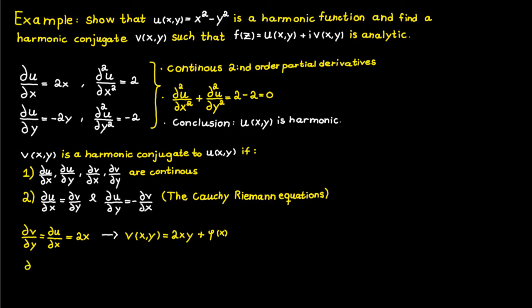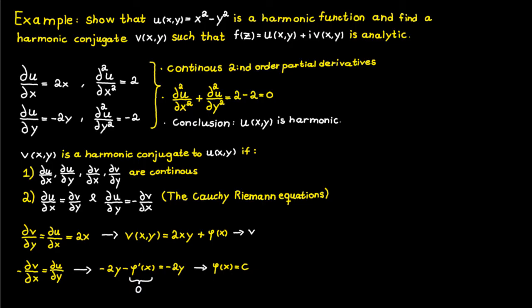Now we use the second Cauchy-Riemann relation: the negative of the derivative of v with respect to x should equal the derivative of u with respect to y. This gives us minus 2y minus the derivative of the unknown function equals minus 2y. This is only true if the unknown function's derivative is zero, which means the function itself must be a constant.